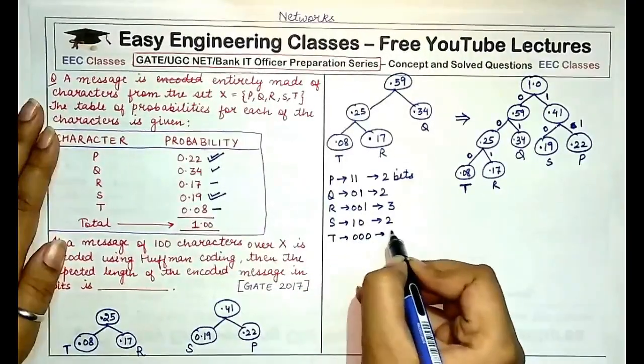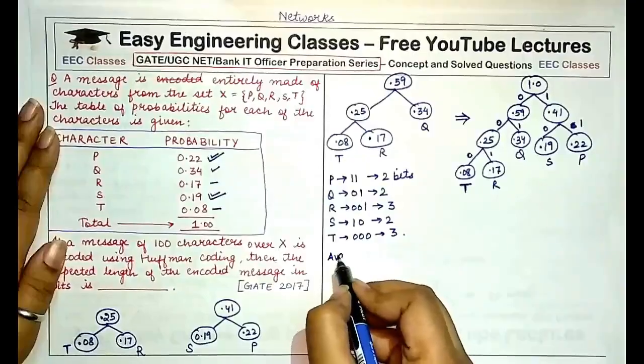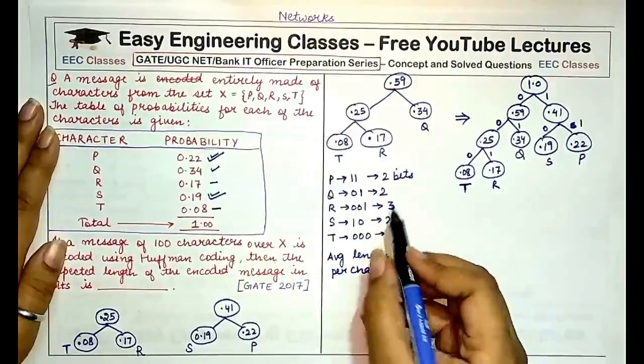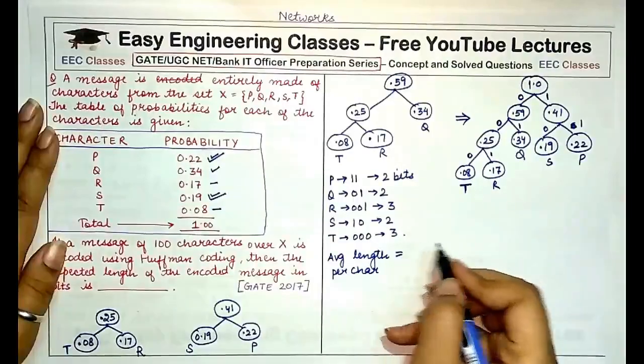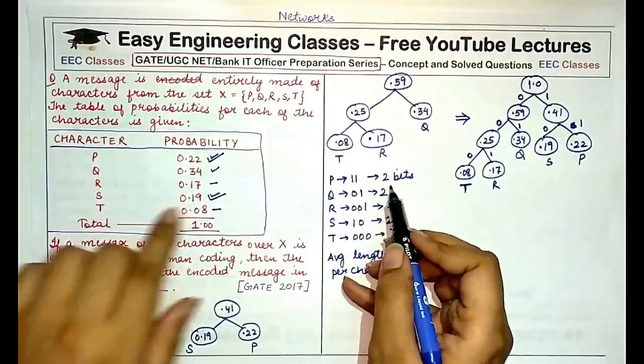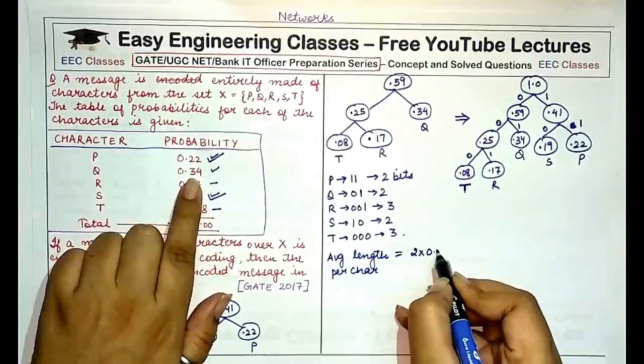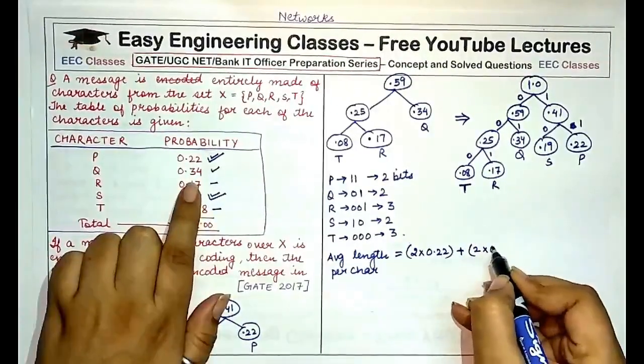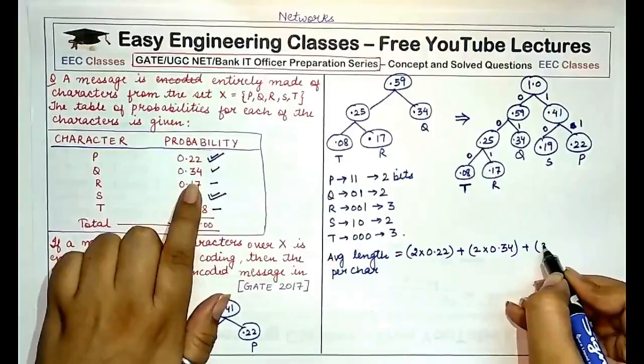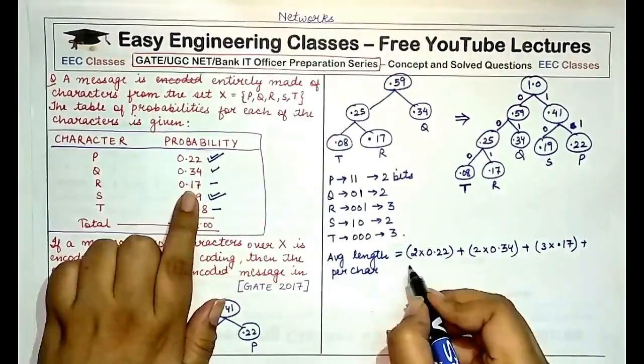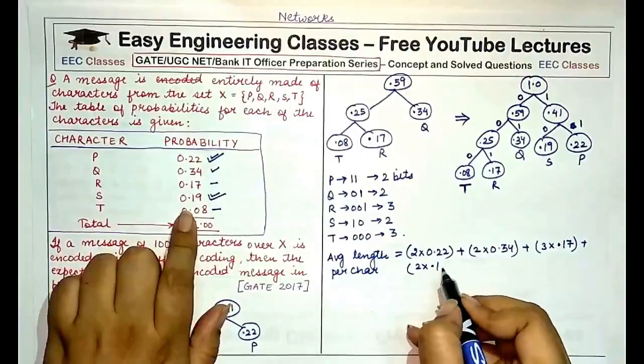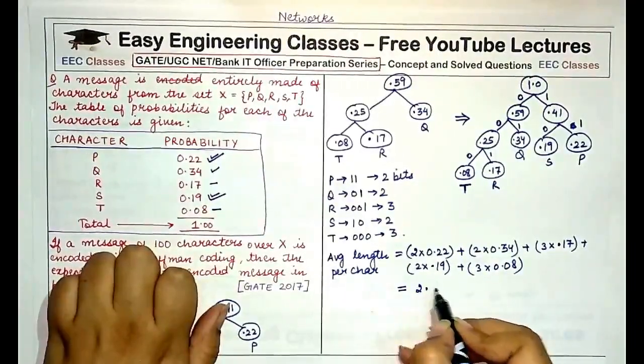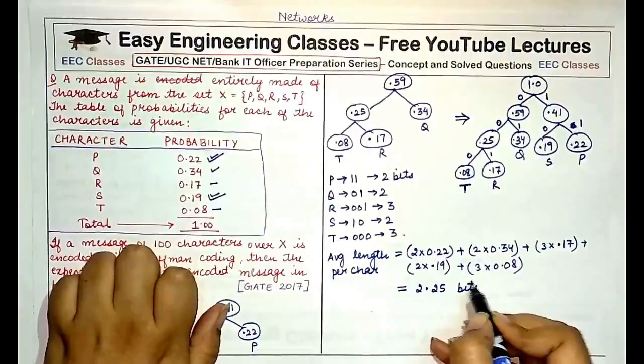Now to find out the average length assigned per character, we have to multiply these lengths of the bit stream assigned to each character with their respective probabilities. So P is assigned 2, multiplied by 0.22, plus Q is assigned 2, multiplied by 0.34, plus 3 into 0.17, plus 2 into 0.19, plus 3 into 0.08. This when you calculate would come out to be 2.25 bits.